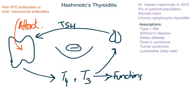Now we are going to focus on Hashimoto's thyroiditis, which is the most common cause of primary hypothyroidism. It is named after Japanese physician Dr. Hakaru Hashimoto, who discovered it in 1912. It is found in five percent of the general population, is more common in women than men, and is also known as chronic lymphocytic thyroiditis. It is associated with other autoimmune disorders like type 1 diabetes, Addison's disease, and celiac disease, so you should screen patients for hypothyroidism in these conditions.